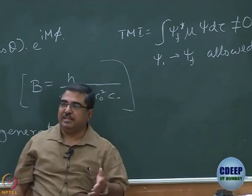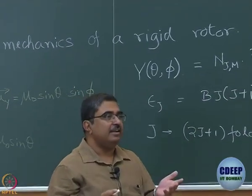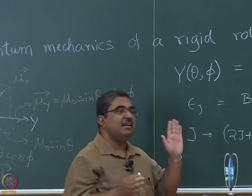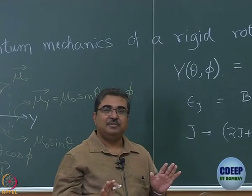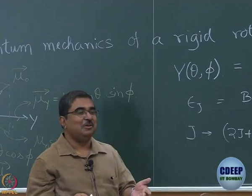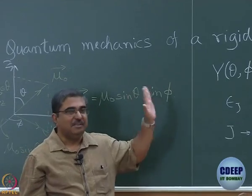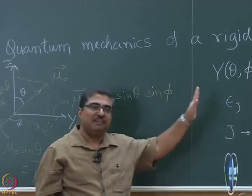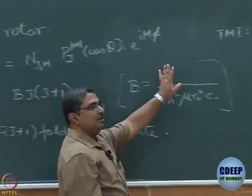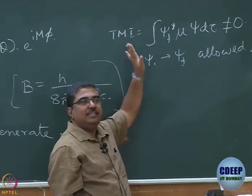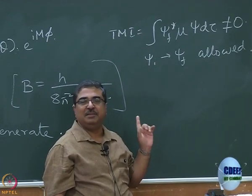The answer is transition moment integral, which is integral psi_F star mu psi_I d tau. That must be non-zero for the psi_I to psi_F transition to be allowed. This integral is called transition moment integral, and for a transition from psi_I to psi_F - I for initial, F for final - to be allowed, this must be non-zero. For now, please believe me that this is the condition. We are going to derive this as well from time dependent perturbation theory.